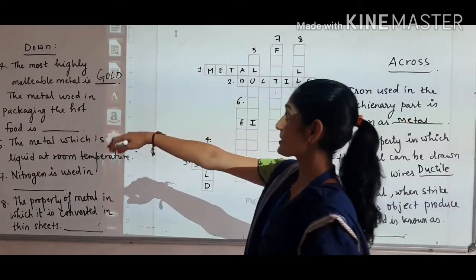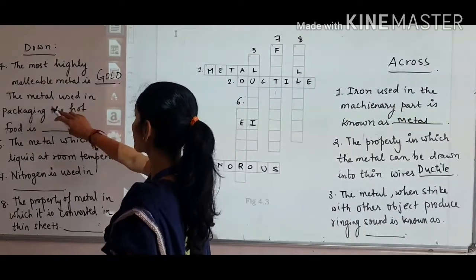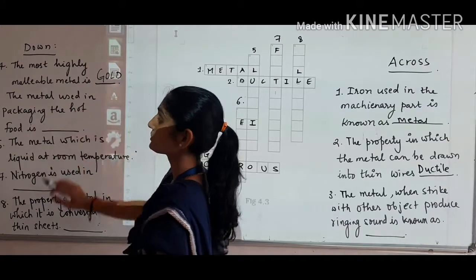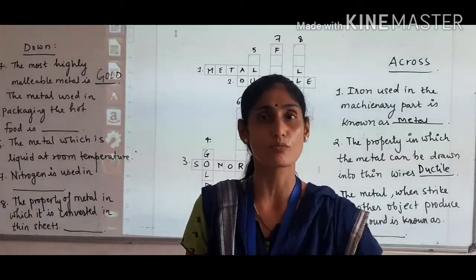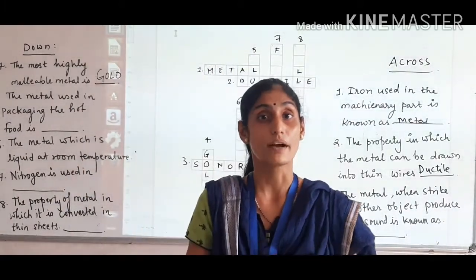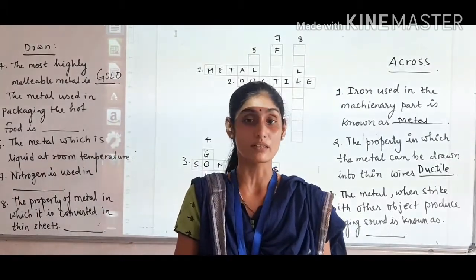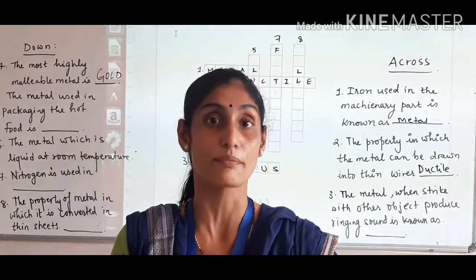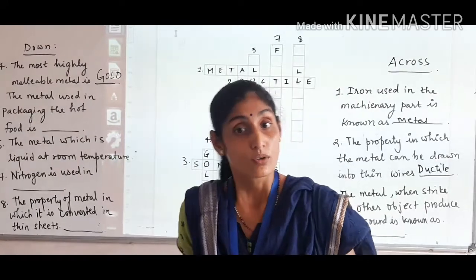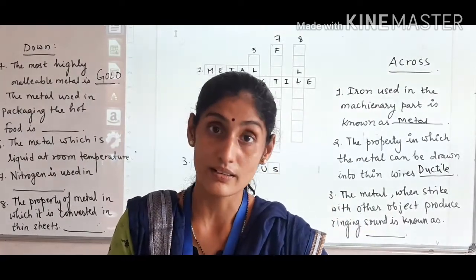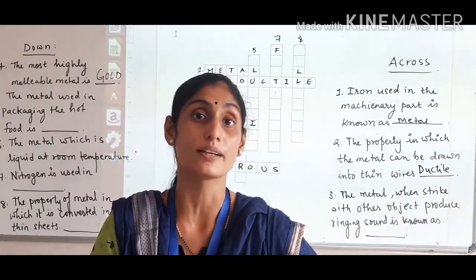This one you will see: the metal used in packing is very powerful. We have learned about metals and non-metals. In metals, we learned about iron objects, which are in machinery parts, made of iron, which is in jewelry. Aluminium.